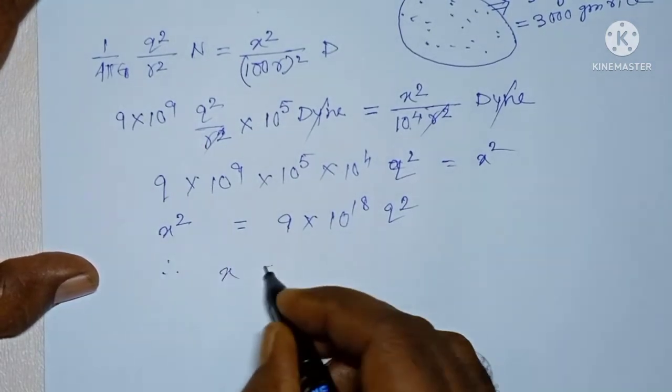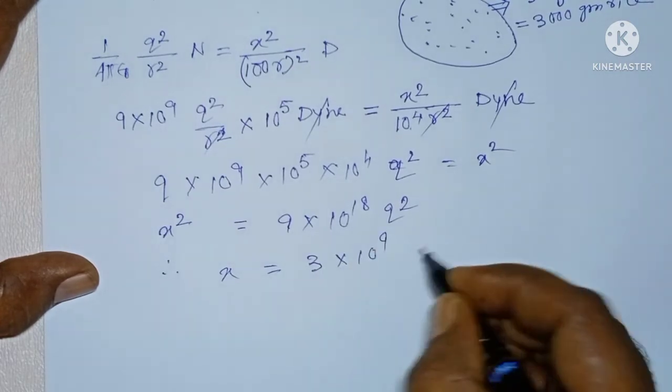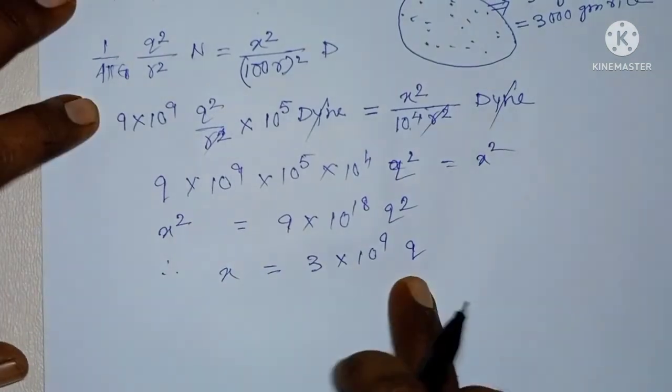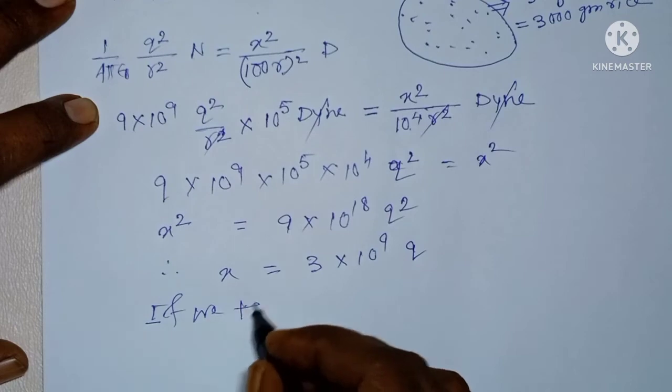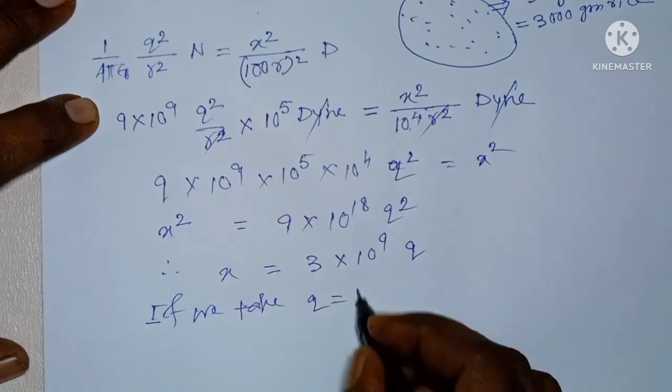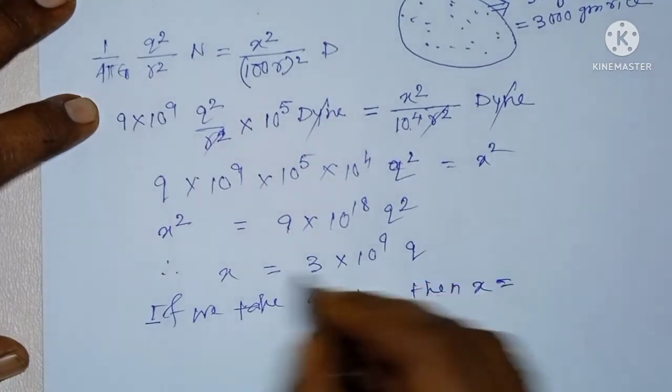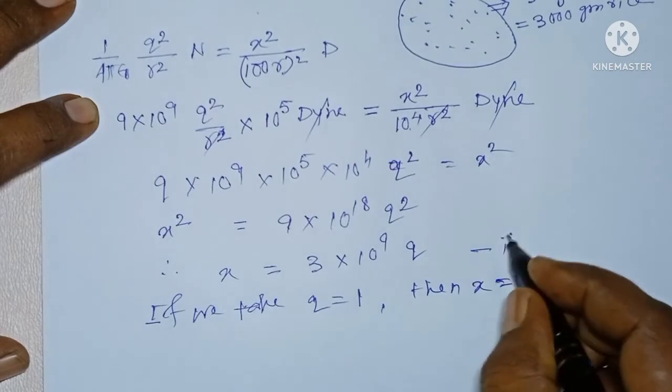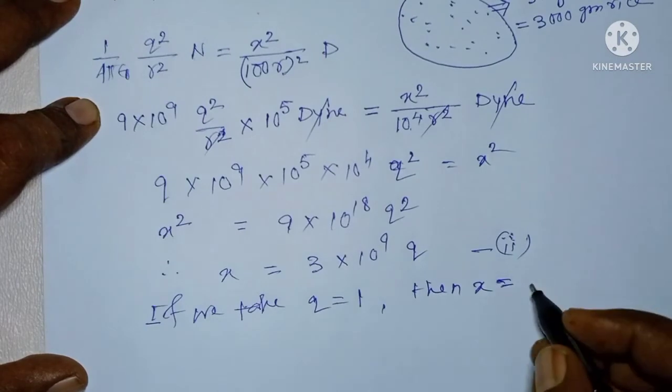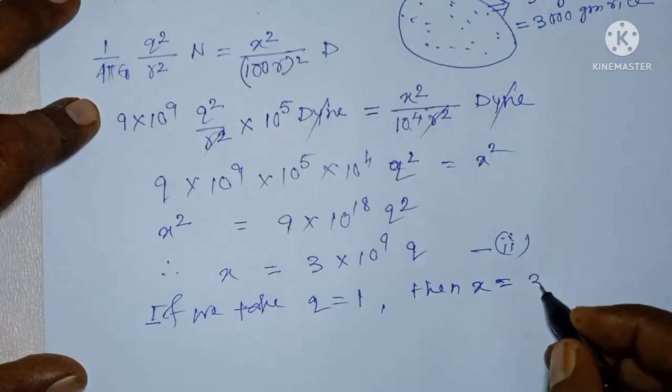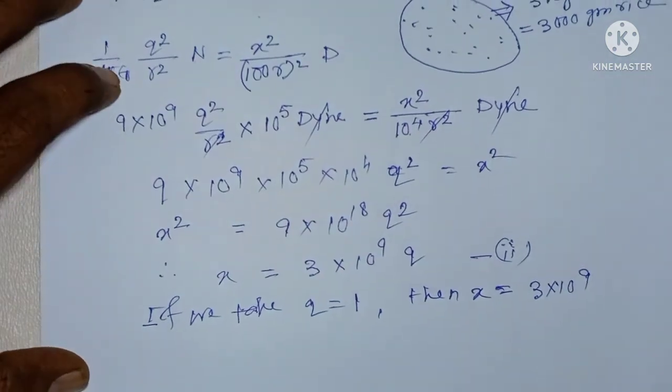Therefore, X equals to 3 into 10 to the power 9 Q. If we put Q equals to 1, then X equals to from this equation, take this equation as equation number 2, and from this equation we get for Q equals to 1, X equals to 3 into 10 to the power 9.